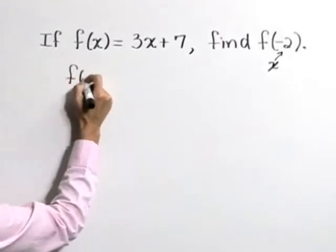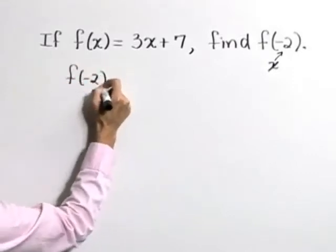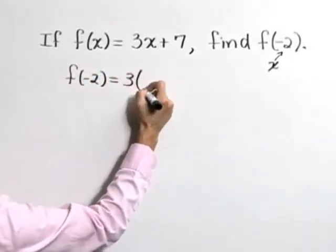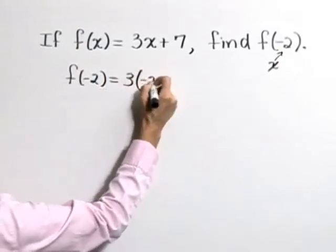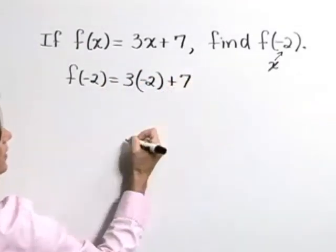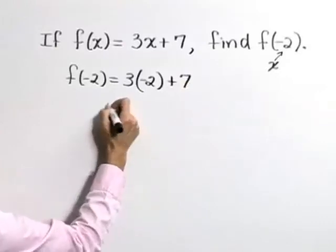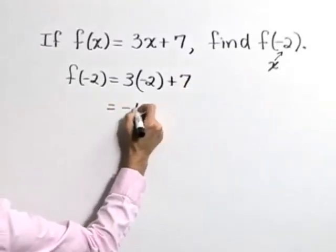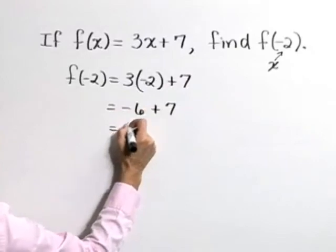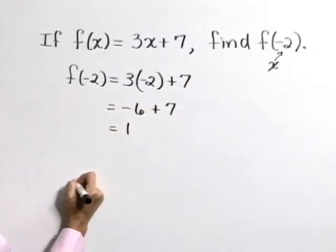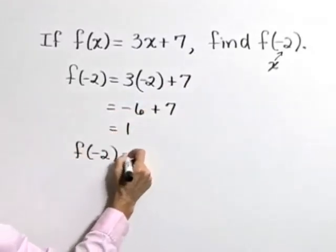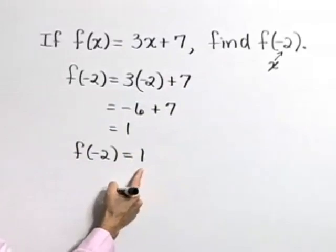Therefore, f of negative 2 is equal to 3 times — in place of x, substitute negative 2 — plus 7. Simplifying, this gives negative 6 plus 7, or 1. So we would say that f of negative 2 is equal to 1.